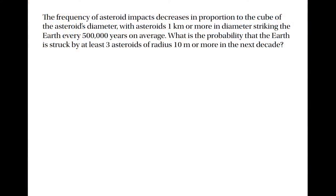Now, I read somewhere recently that the frequency of asteroid impacts decreases in proportion to the cube of the asteroid's diameter, with asteroids of one kilometre or more in diameter striking the Earth every 500,000 years on average. By the way, I'm using the word asteroid to cover all sorts of extraterrestrial objects that might impact the Earth. So in particular, I'm not really distinguishing between asteroids and comets and meteors.